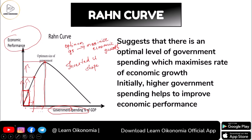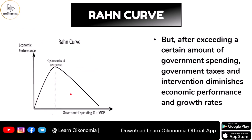However, this will not stay so forever. After a particular point — the optimum — further government spending is driven by an increase in tax rates, as the government gets revenue from taxes to fund that spending. After this optimum point, even though government spending increases, the level of economic growth actually falls compared to what it was before.